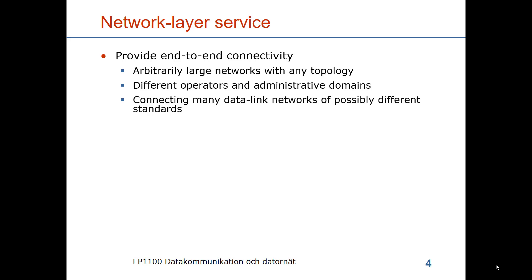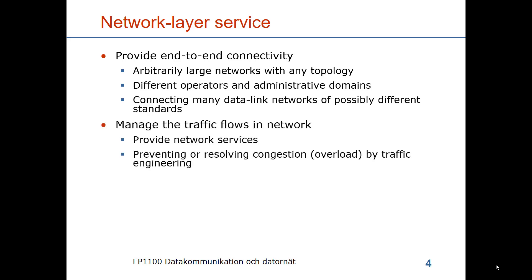So we have seen the IEEE 802.11 and 802.3. There are other types of data links that have not been covered, such as synchronous data hierarchy. And we have the access networks of the 3G, 4G, and 5G mobile networks. It should prevent or resolve congestion, which is another word for overload. This is done by techniques called traffic engineering.